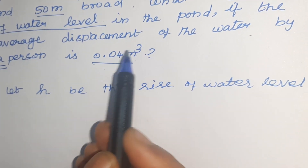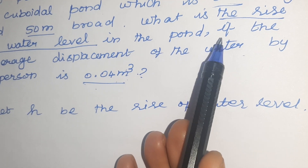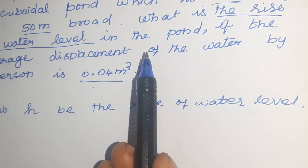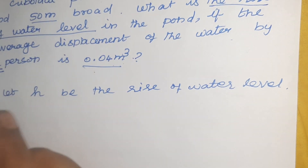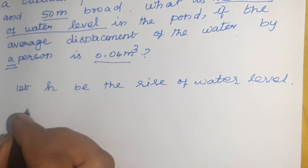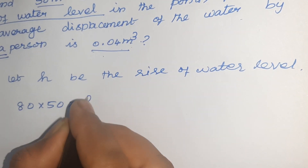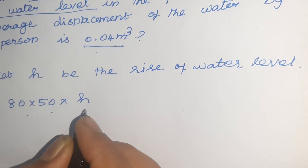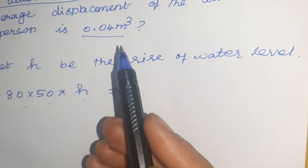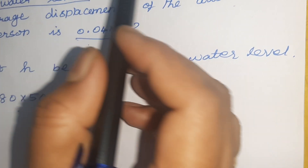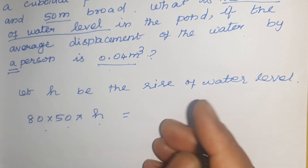If the level of water rises, it forms a cuboidal shape. So the volume of the cuboidal pond is L × B × H, which equals 80 × 50 × H. This is equal to the volume of 500 persons.